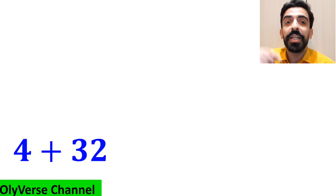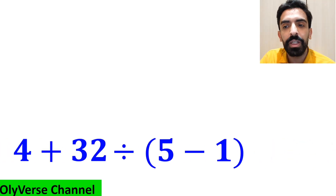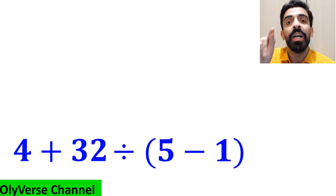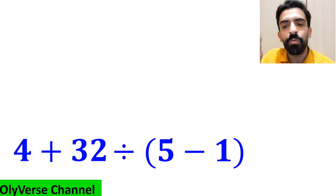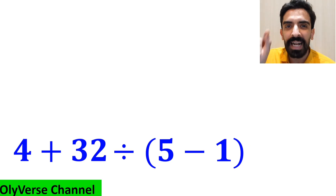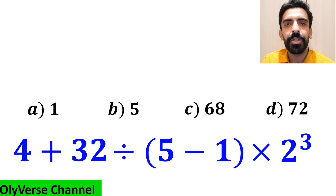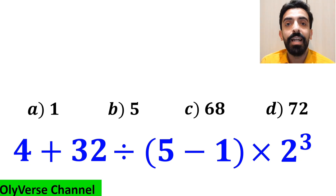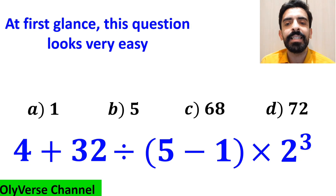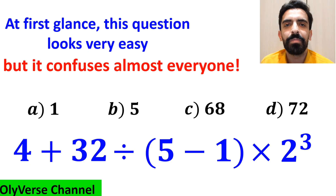What is the value of the expression 4 plus 32 divided by open parenthesis 5 minus 1 close parenthesis times 2 to the power of 3? Which option do you think is the correct answer to this question? At first glance, this expression looks very easy, but it confuses almost everyone.